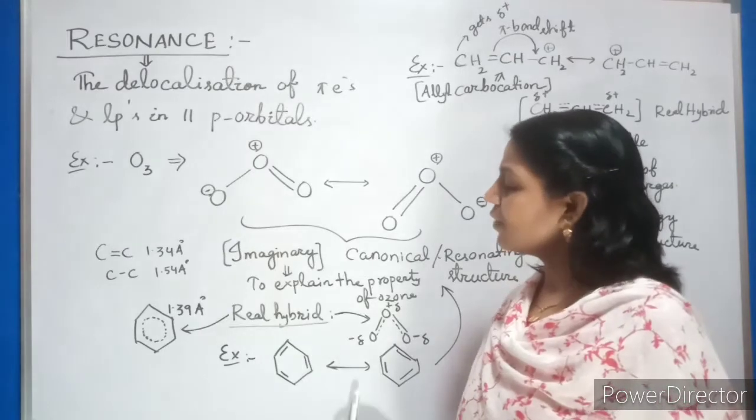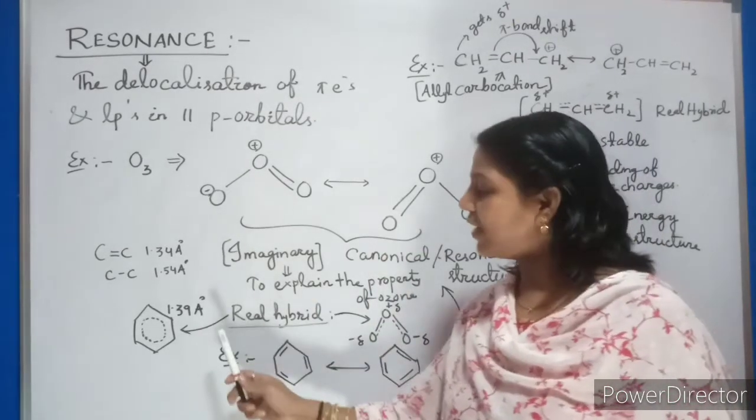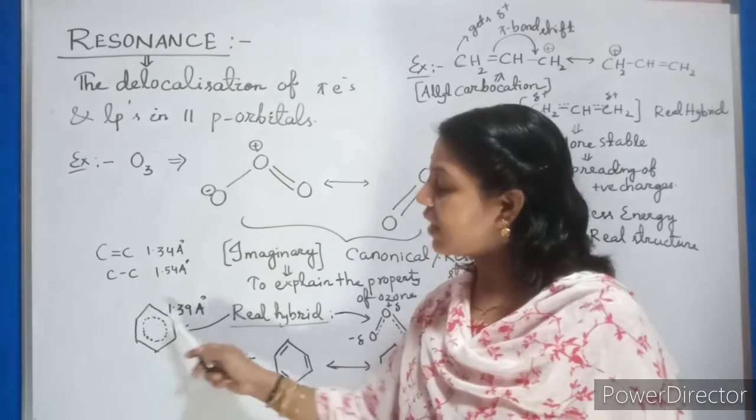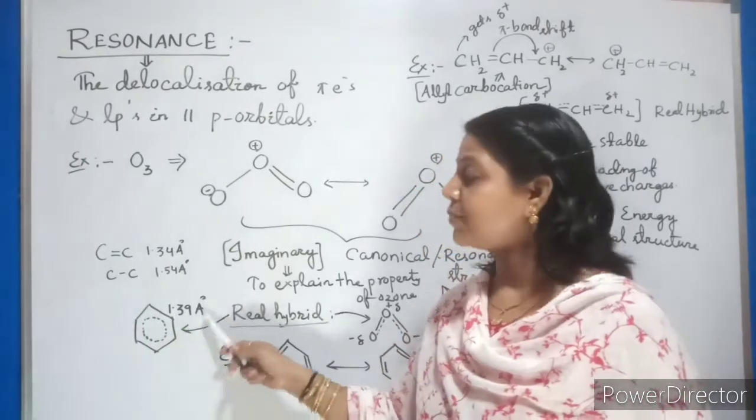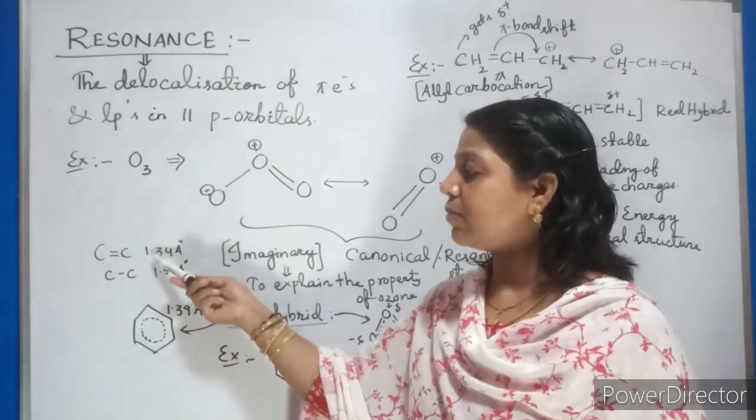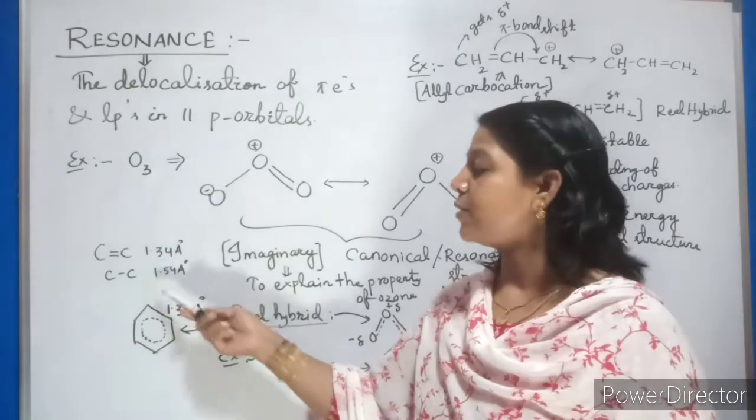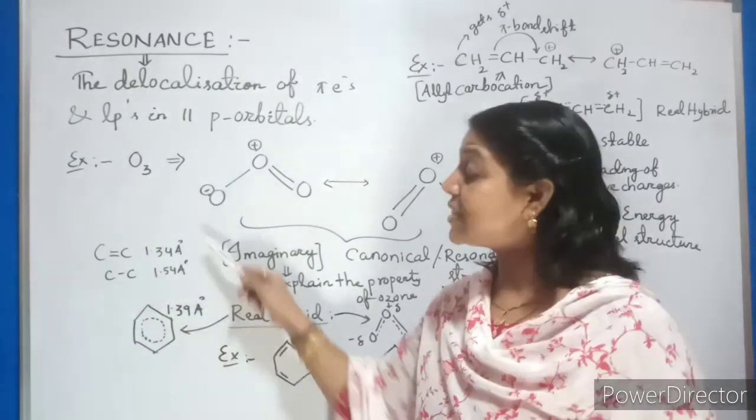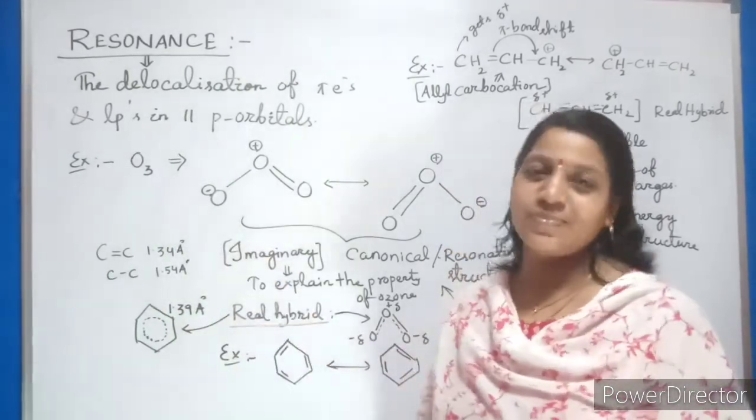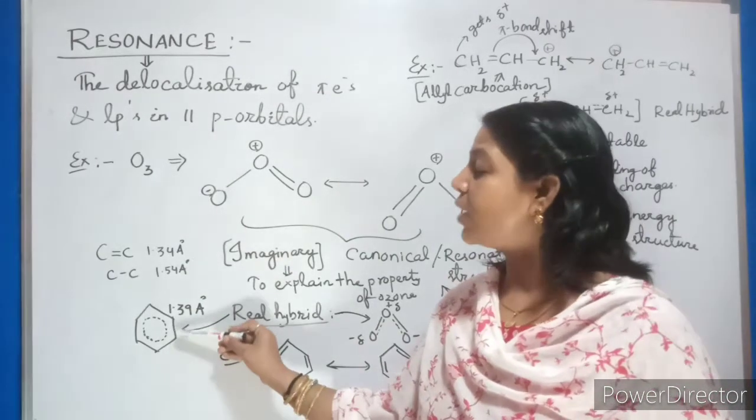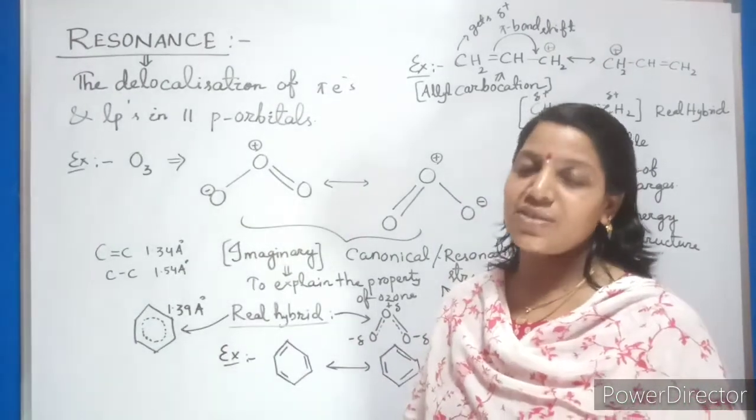But practically when you see that, what you find is the overall bond length is 1.39 angstrom. Now neither it is equal to double bond nor it is equal to single bond. 1.39 angstrom which is in between these two values. This is nothing but called as a real hybrid structure.